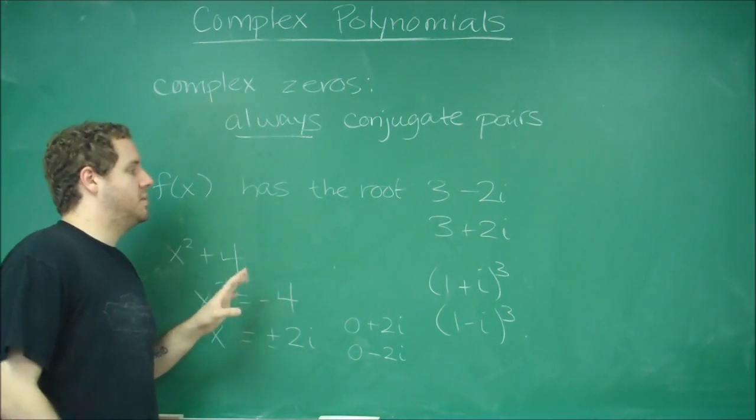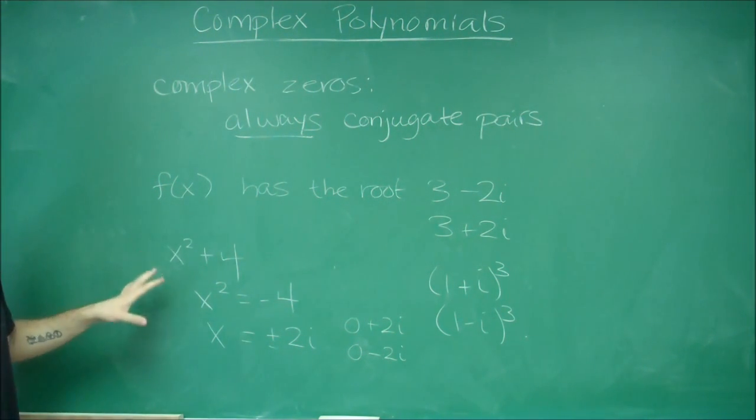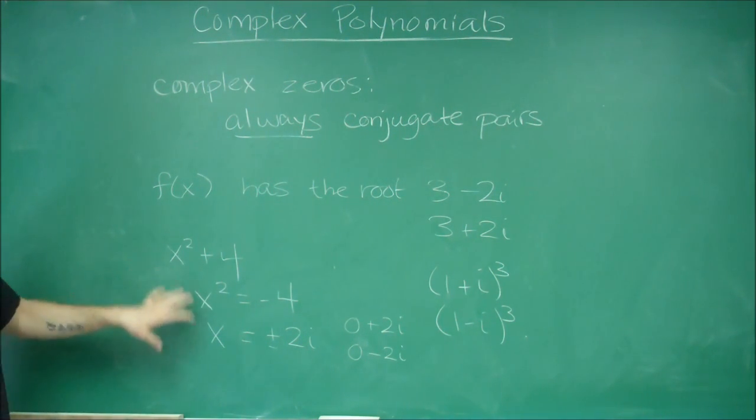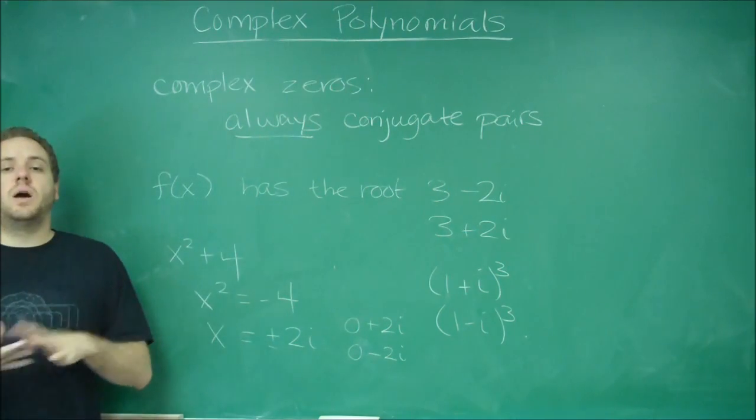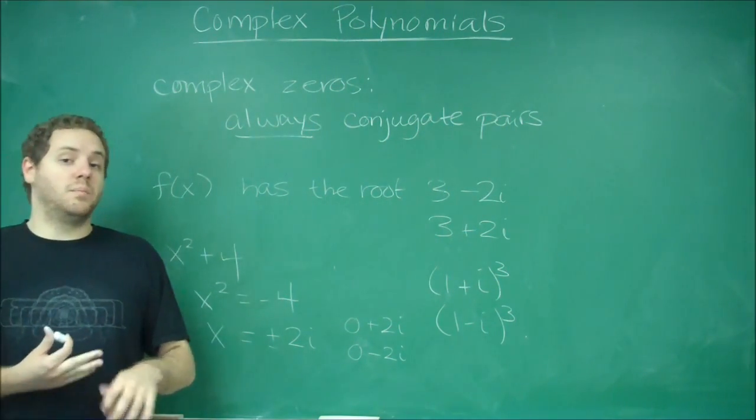So complex zeros always come in conjugate pairs, and now that we're dealing with complex numbers, you can always say that a polynomial has as many zeros as its degree. It just so happens that some of them might be complex numbers.